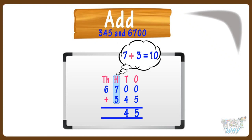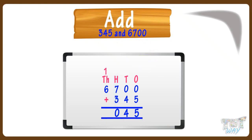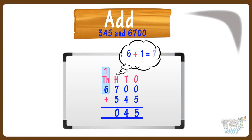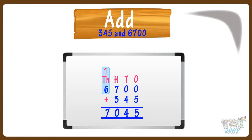Write 0 at hundreds place, and carry over 1 to thousands place. As we always carry over to the next digit when the sum of two numbers comes out to be a two-digit number. Now, add the numbers at thousands place. 6 plus 1 equals 7, so write 7. We have done the addition. This is our answer.